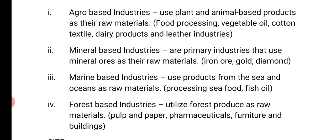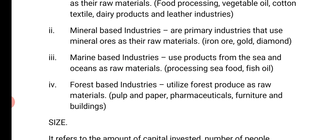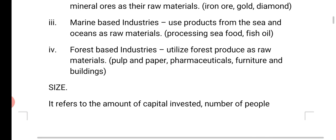Mineral-based industries are primary industries which use mineral ores as their raw materials, like iron ore, gold, and diamond. Marine-based industries use products from the sea and oceans as raw materials, like processing seafood and fish oil. Forest-based industries utilize forest produce as raw material, like pulp and paper, pharmaceuticals, furniture, and buildings.